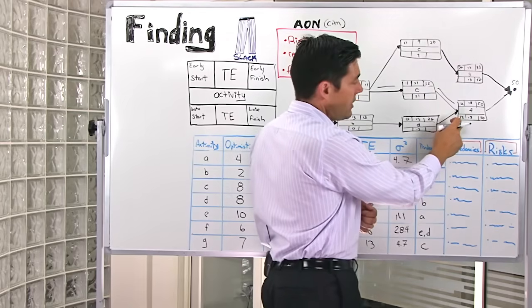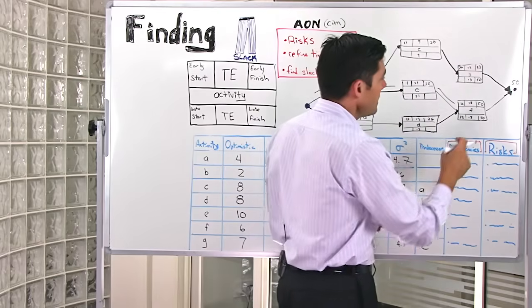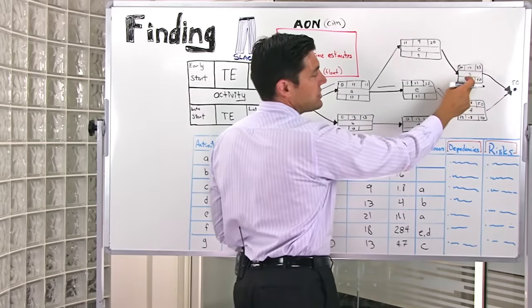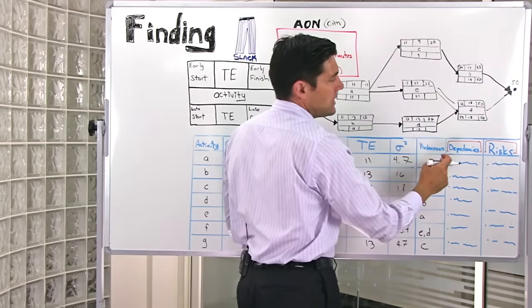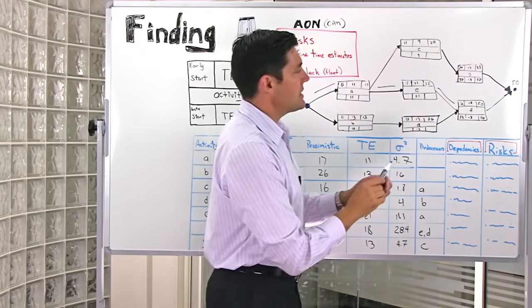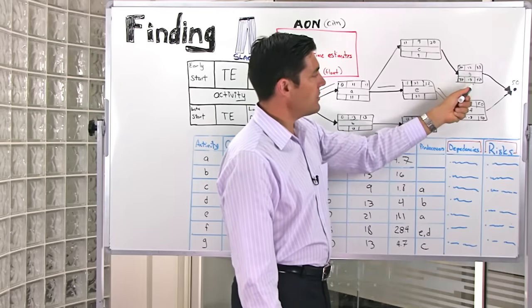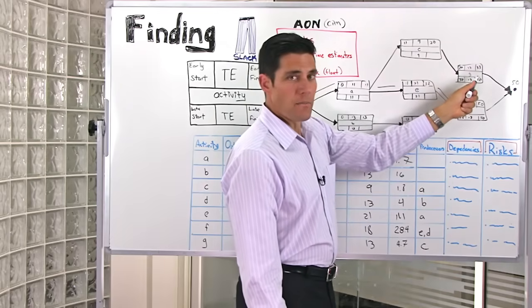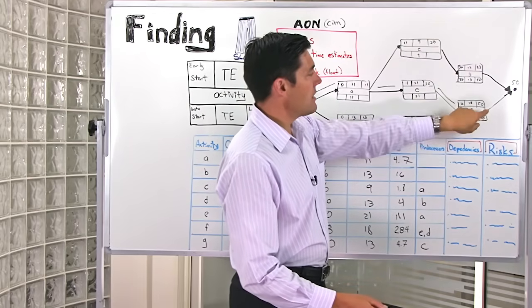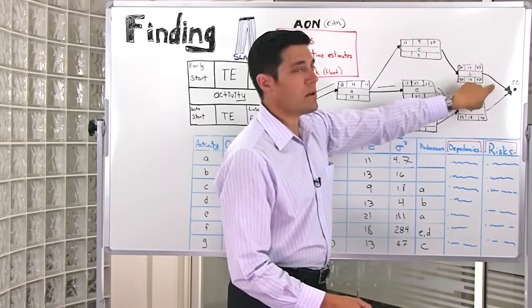The latest that this project node activity can start is 32 days, the same as it was before going forward through the project. Going backwards, however, you'll see that since I don't have to actually start activity G for 37 days, because even if I do it at 37 days starting it, it'll take me 13 days to get through it, and I'll be completing it by the 50th day, which is the same time that I'll be completing task F. Therefore, I've just found that there's some slack right here along this path.